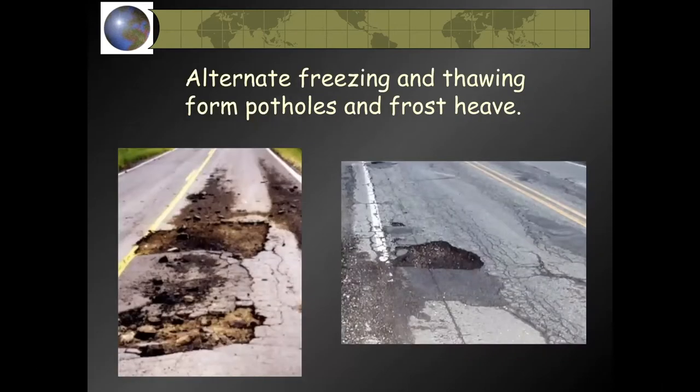Alternate freezing and thawing forms potholes and frost heave. Last year when we got that tremendous freeze, it was cold for so long. Our roads had already started turning bad with potholes, but it got even worse because of the freezing point held for a long period of time. Then it warmed up and created more potholes, making the roads we travel even rougher.